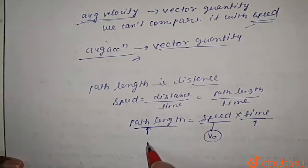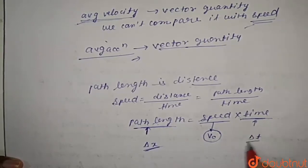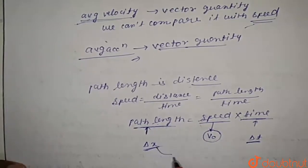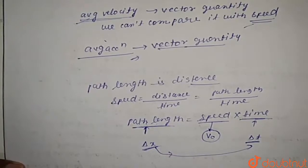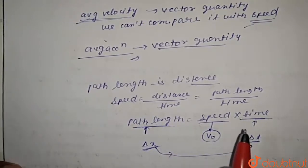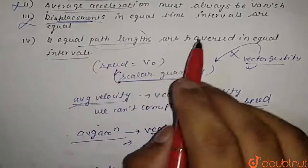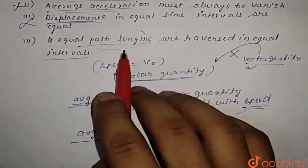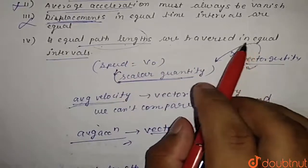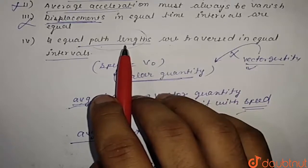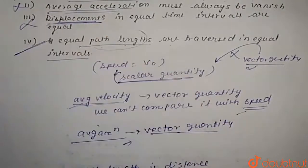If there is any change in time delta-t, there will be a corresponding equal change in path length delta-x. So equal path lengths are traversed in equal time intervals, because both are directly proportional as speed is constant. Therefore option four is correct.